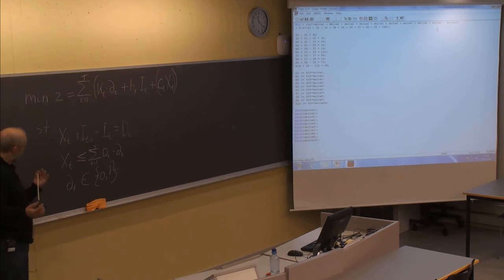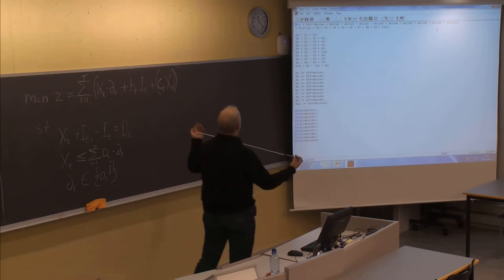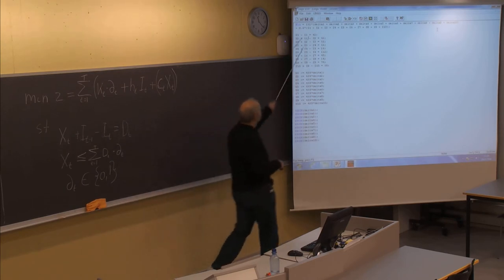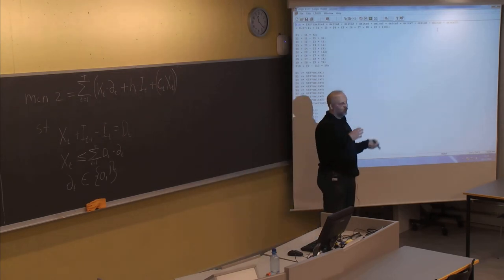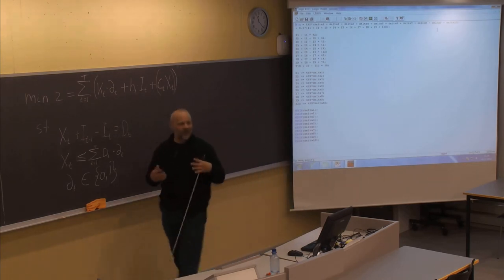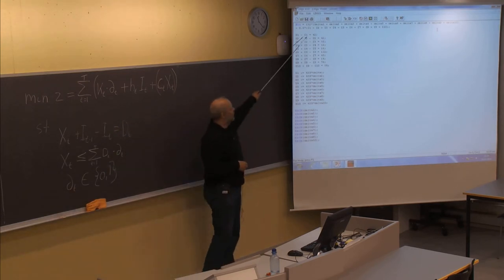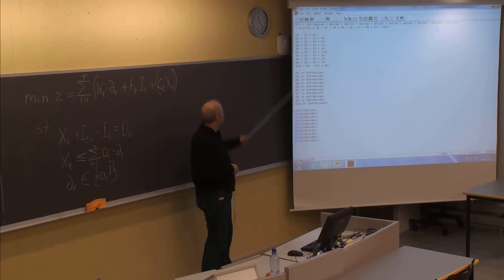This is of course much larger than the previous example, but still this is a very small problem. In real life, these types of optimization problems can be huge — they can have thousands of different variables. If we include also the production, we would have 10 more variables here. If we include even more aspects in a real-life problem, we might have lots of different variables, and also thousands of different constraints. So these types of problems can fast become very huge.